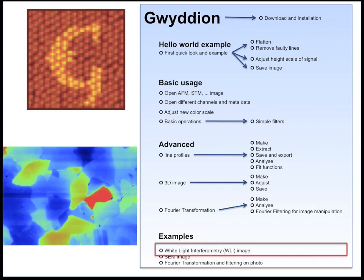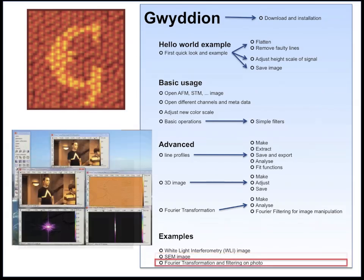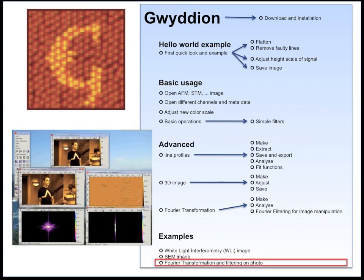Last but not least, I will show you some examples: how, for example, to import a white light interferometry image, a WLI image that looks like this, or how to import an SEM image. And then at the end, I will just import a simple JPEG graphics photo and Fourier transform it, Fourier filter it, and show you what is possible to do with this program.